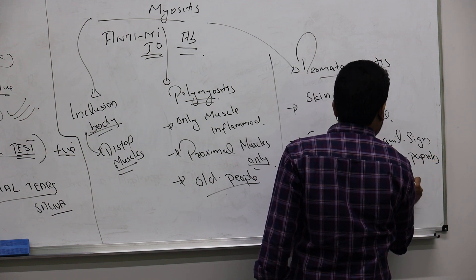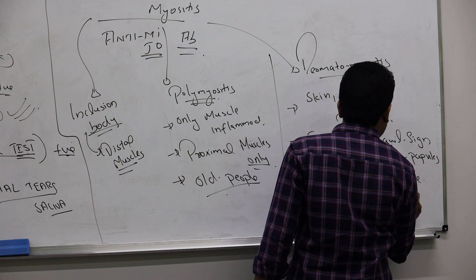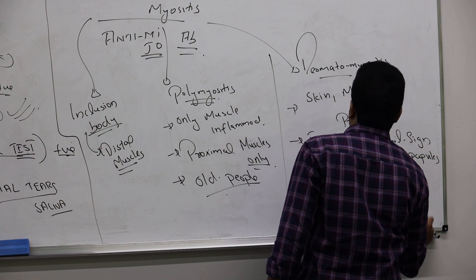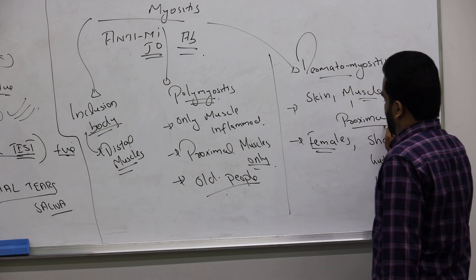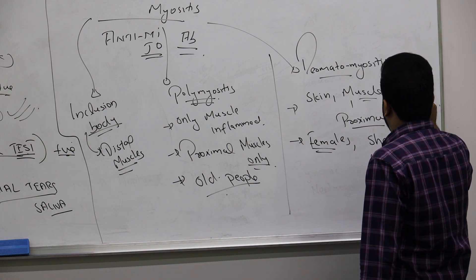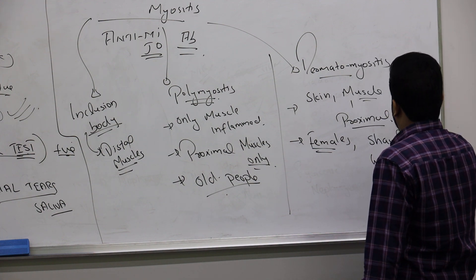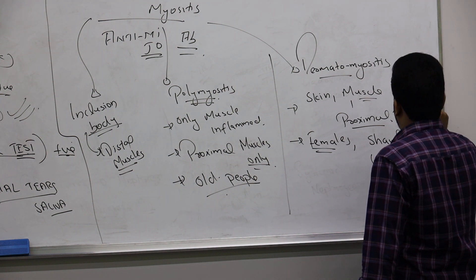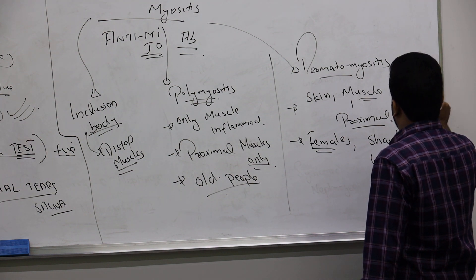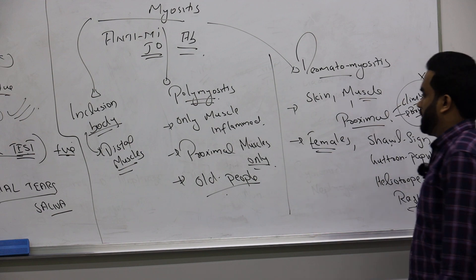If you see these things, sure you can confirm the patient have dermatomyositis. So they are proximal muscle. In climbing stairs, difficulty, brushing, brushing, like holding the things. This all will be difficult in them.